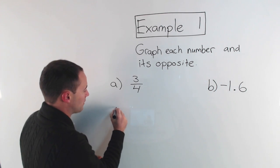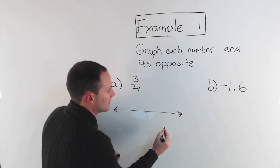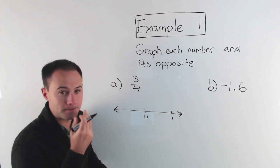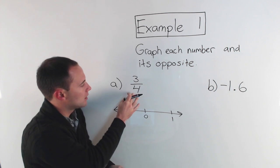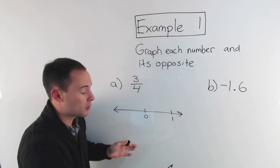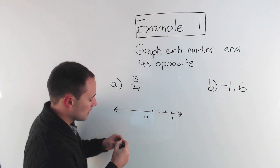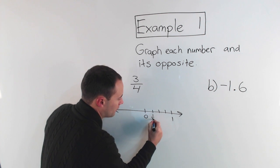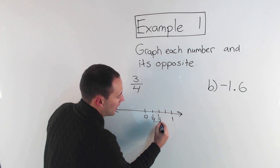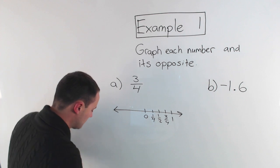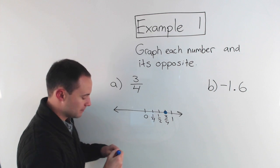Starting with a number line, we have three-fourths. I know three-fourths is in between zero and one. To graph it, since it's in fourths, let's break that section into four pieces. That would give us one-fourth, two-fourths, and three-fourths. I'll label them: one-fourth, two-fourths — which simplifies to one-half — and three-fourths right there. So when I'm graphing three-fourths, I put a big point right there.